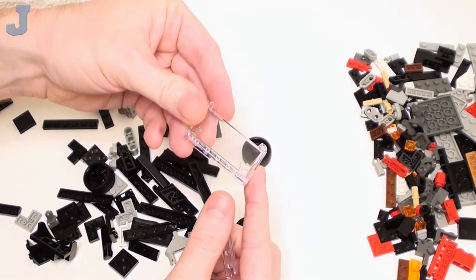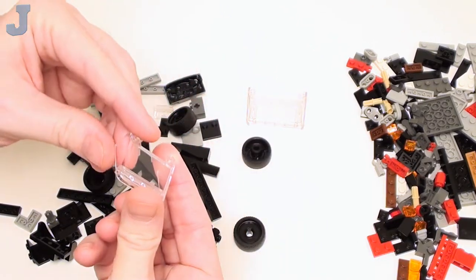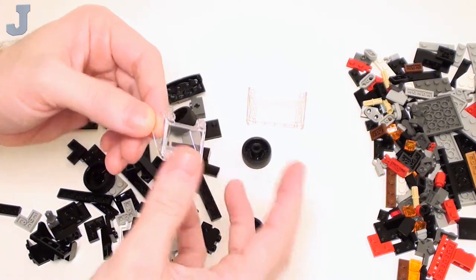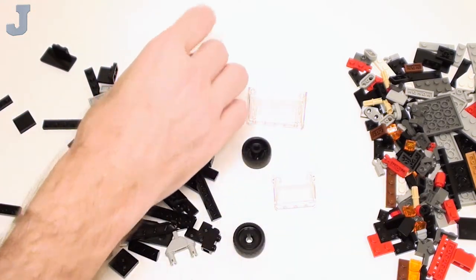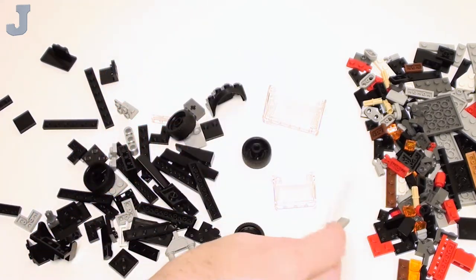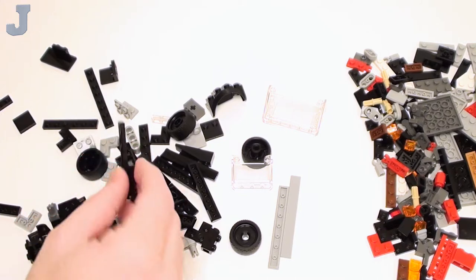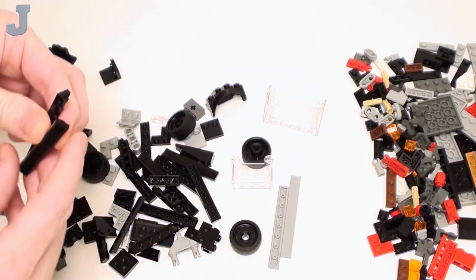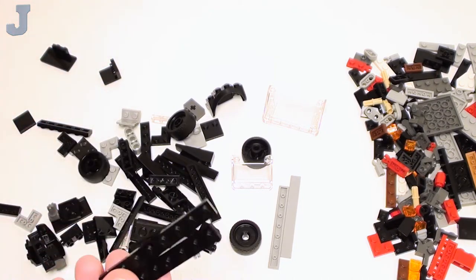This is a 3 by 6 by 2, and this is a 3 by 4 and 1 and 1 third. A couple more of these mud guards. Some 1 by 8 flat tiles. Lots of black pieces in here. If you're looking for black, there you go. Especially 1 by 8 plates and 1 by 6 plates.